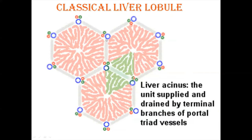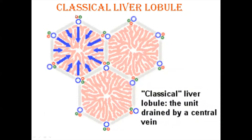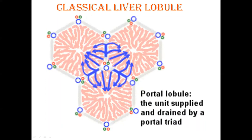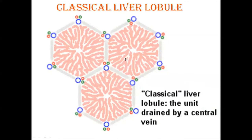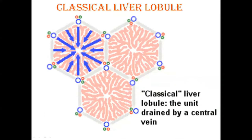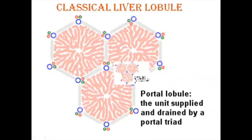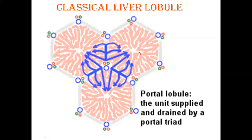At the corners of the classic hepatic lobule we have portal triads. The portal triad consists of three structures. Blood from the portal vein and hepatic artery comes through the sinusoids toward the central vein. The green structure in the animation represents a branch of the bile duct, which receives bile from the hepatocytes. So arterial and venous blood go toward the central vein, while bile flows in the opposite direction toward the bile duct.